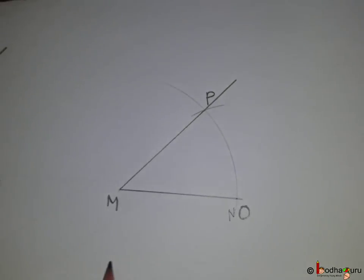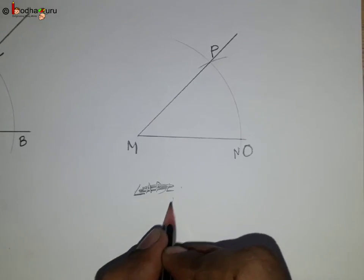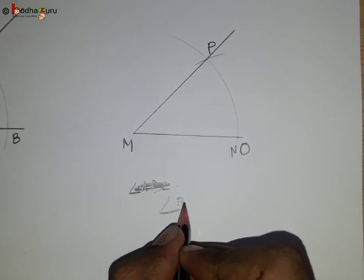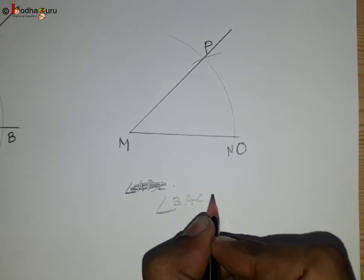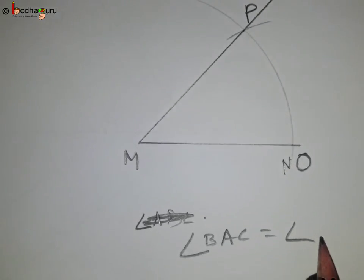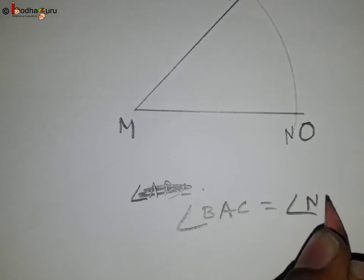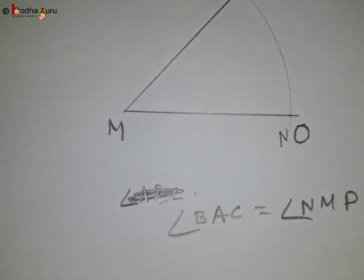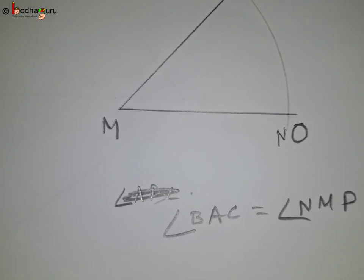The distance between point B and C is the same as the distance between point N and P, and angle NMP is equal to angle BAC. Thus, using a compass, you can make a copy of any given angle. That's all for now. Bye-bye.